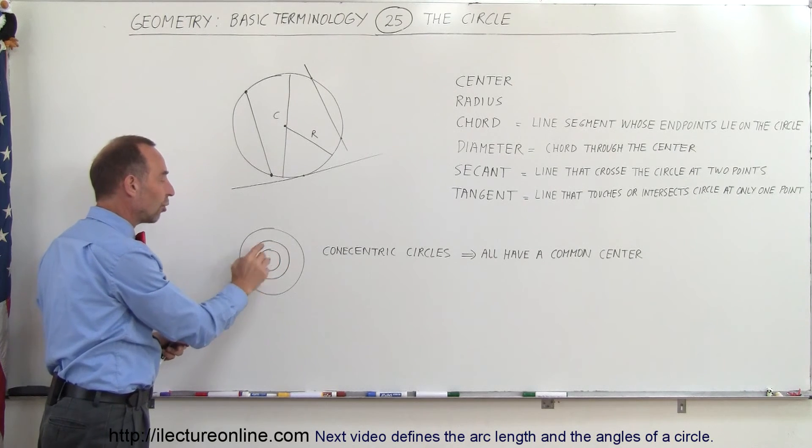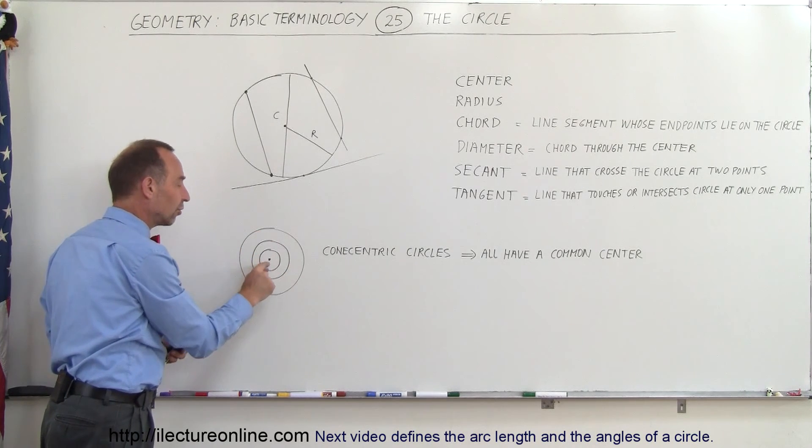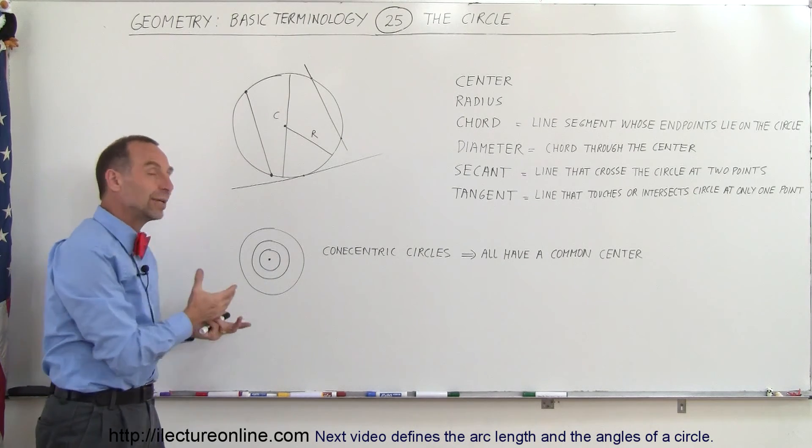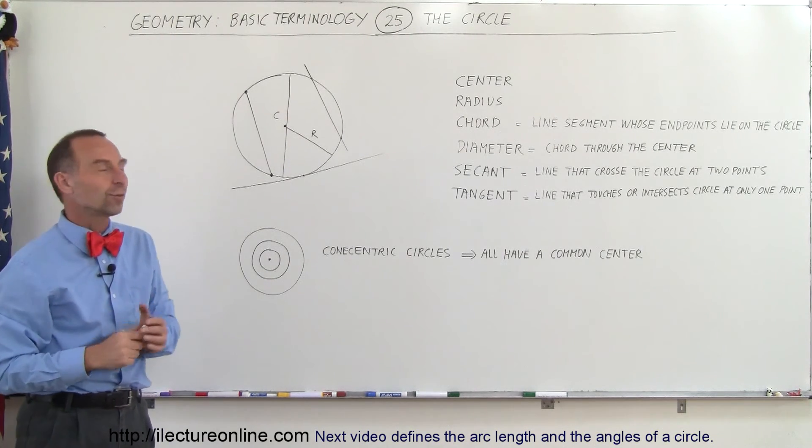we have three circles, and in all cases, all three circles have the center of the circle right at the same spot, and that is therefore called a set of three concentric circles. That's the terminology for that.